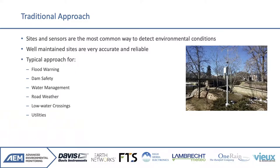When we think about cameras within a monitoring network, it really starts at the very beginning. When we think about monitoring networks and understanding water level, rainfall, wind speed, and all the full met parameters, sites and sensors are the most common way to detect environmental conditions. That's a fairly obvious statement, but it's worth setting the groundwork: a well-maintained site, regardless of its sensor suite, is typically very accurate and reliable. As an industry, we have a lot of experience in designing around that.